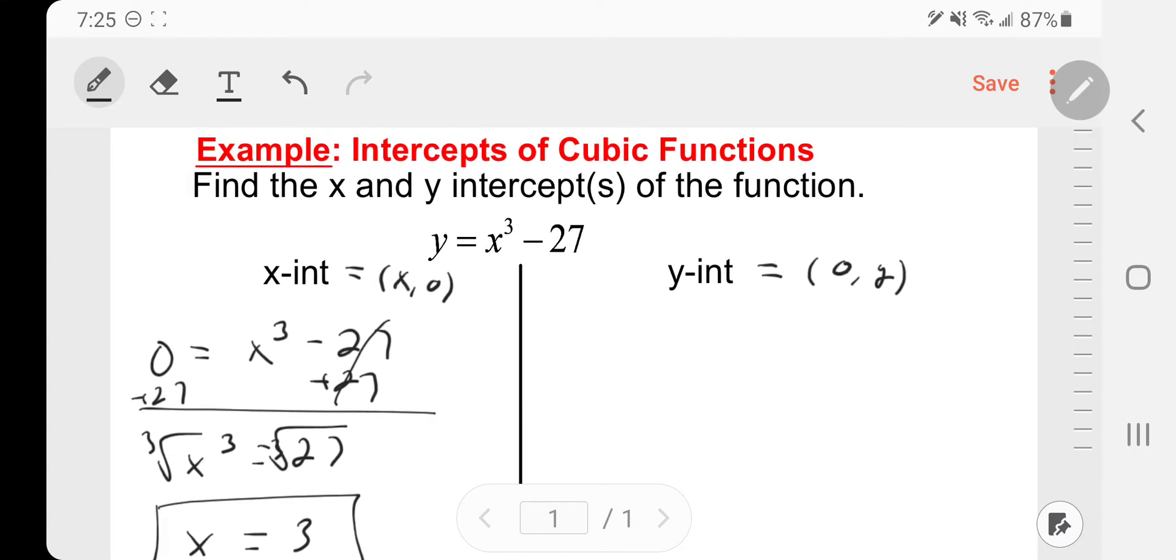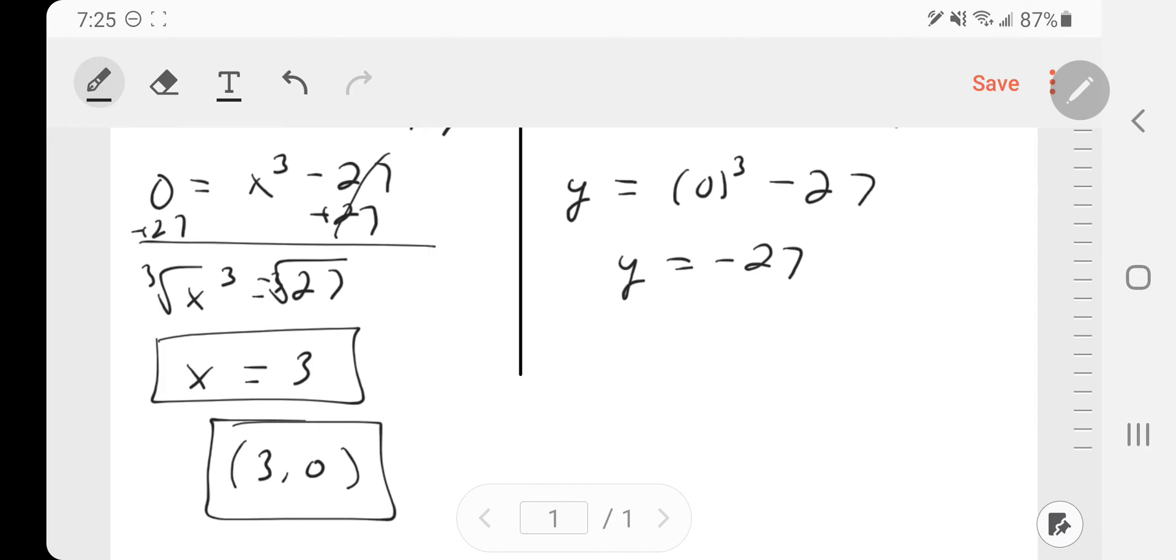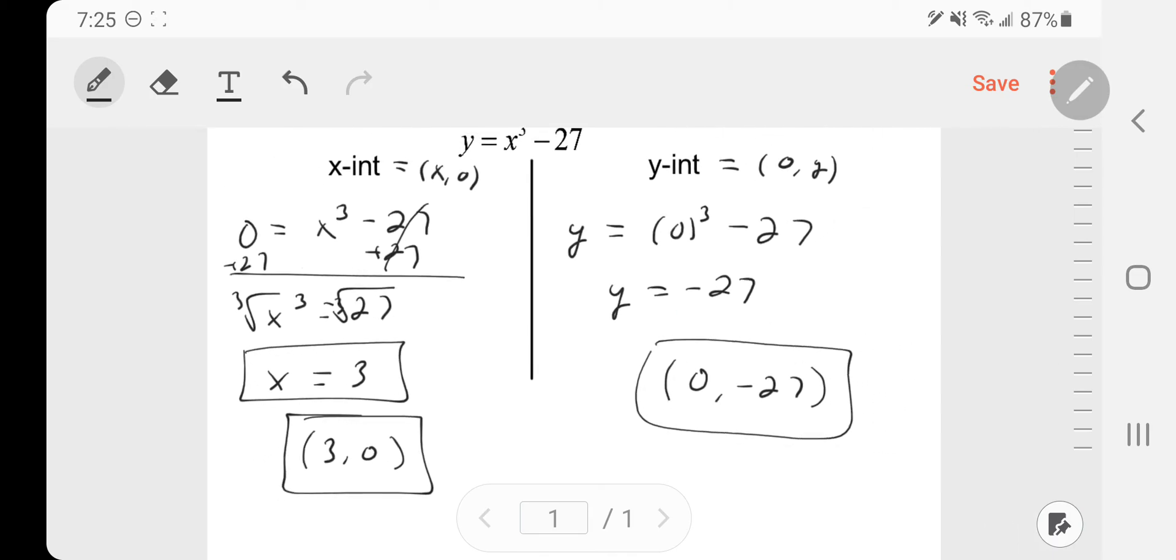If we're looking for the y-intercept we would plug in 0 for x and solve for y, so we get y equals 0 cubed minus 27. Substituting in 0 for x, we get y equals negative 27. Our coordinate for our y-intercept would be 0 comma negative 27.